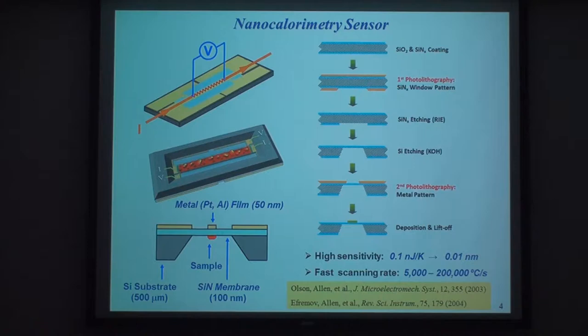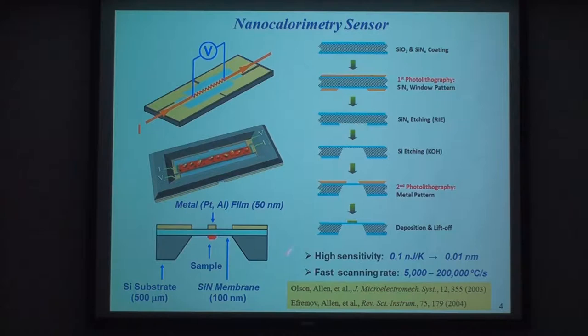During in-situ deposition, you can actually see atoms being added to the backside of the membrane and see changes in the heat capacity of these atoms being added. Because of the very low thermal mass of the calorimeter—you only have a very thin film of silicon nitride as your calorimeter cell—you can have very fast scanning rates. Typically we use 50,000 degrees per second, but we can have a range from 5,000 to 200,000 degrees per second.